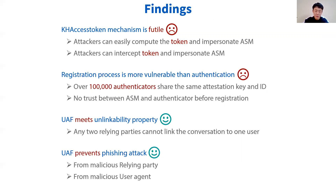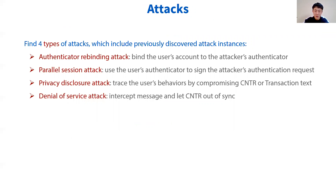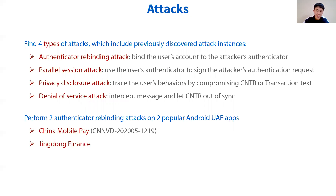The UAF protocol prevents phishing attacks from a malicious relying party or a malicious user agent. From the minimal assumptions, we identify four types of attacks, which include previously found attack instances. Those four types are: Authenticator Rebinding Attack, Parallel Session Attack, Privacy Disclosure Attack, and Denial of Service Attack. We also carried out the Authenticator Rebinding Attack on two popular Android apps, responsibly disclosed the vulnerabilities, and received one confirmed vulnerability ID.